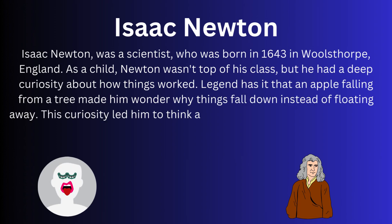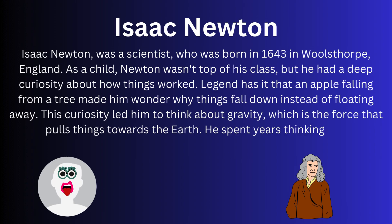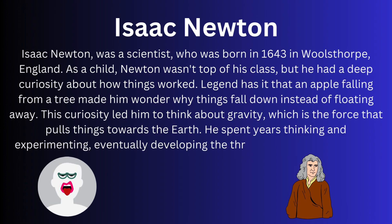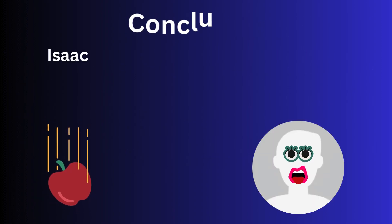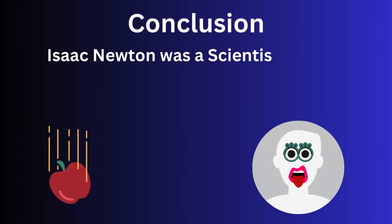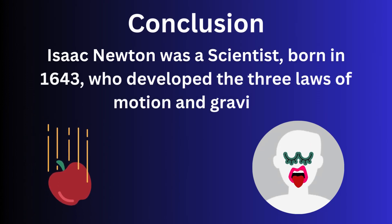This curiosity led him to think about gravity, which is the force that pulls things towards the Earth. He spent years thinking and experimenting, eventually developing the three laws of motion and the law of universal gravitation. In summary, Isaac Newton was a scientist born in 1643 who developed the three laws of motion and gravity.